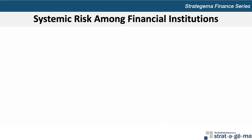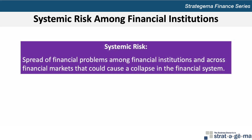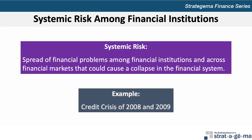The next key concept in the chapter relates to systemic risk among financial institutions. Systemic risk is defined as the spread of financial problems among financial institutions and across financial markets that could cause a collapse in the financial system and cannot be eliminated through portfolio diversification. The best contemporary example of systemic risk is the credit crisis of 2008-2009, where many financial institutions that originated mortgages sold them to other financial institutions in the form of mortgage-backed securities. Those other institutions received lower payments as mortgage defaults occurred, or relied heavily on short-term debt to finance their operations and used their holdings of mortgage-backed securities as collateral, the value of which plummeted as more and more homeowners defaulted on their mortgages.